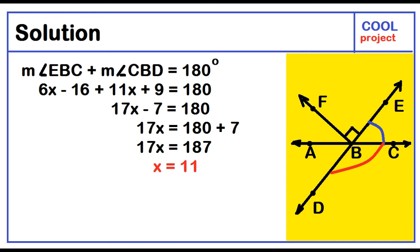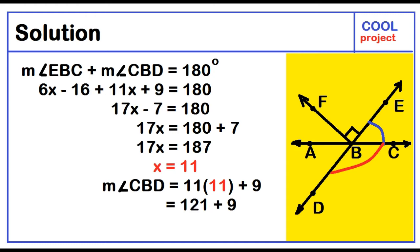The measure of angle CBD is 11x plus 9. Substitute 11 for x. 11 times 11 plus 9 is equal to 121 plus 9. The measure of angle CBD equals 130 degrees.